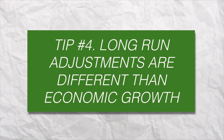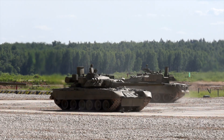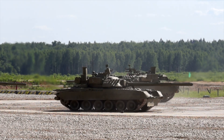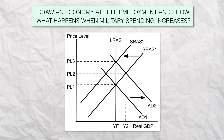Tip number four: long run adjustments are different than economic growth. Let's assume there's an economy at full employment and the government increases military spending by $100 billion. In the short run, aggregate demand will shift to the right, price level goes up, GDP goes up, and we now have a positive output gap. And in the long run, wages and resource prices will increase, so the short run aggregate supply will shift to the left, putting us back at full employment. This is a long run self-adjustment.